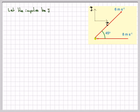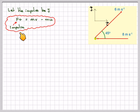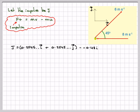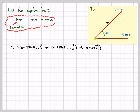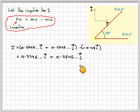Let the impulse be J. We know that impulse equals MV minus MU. So J equals MV, which is 0.2545i plus 0.2545j, minus MU, which is minus 0.48i. Collecting the i components together, J equals 0.7345i plus 0.2545j newton seconds.